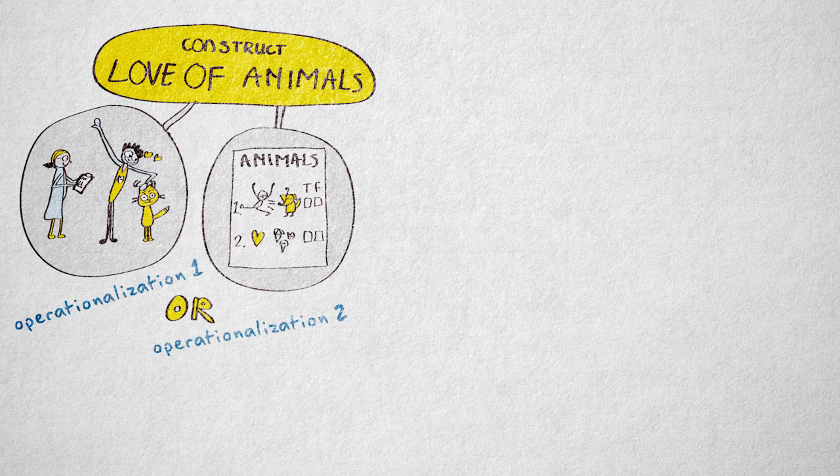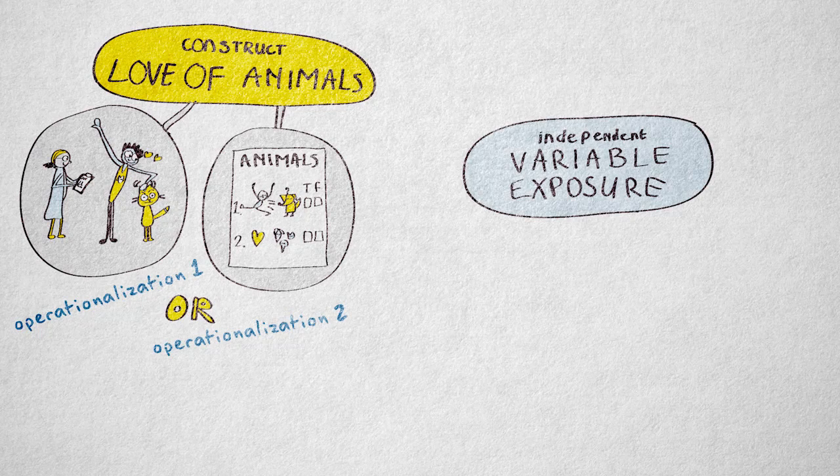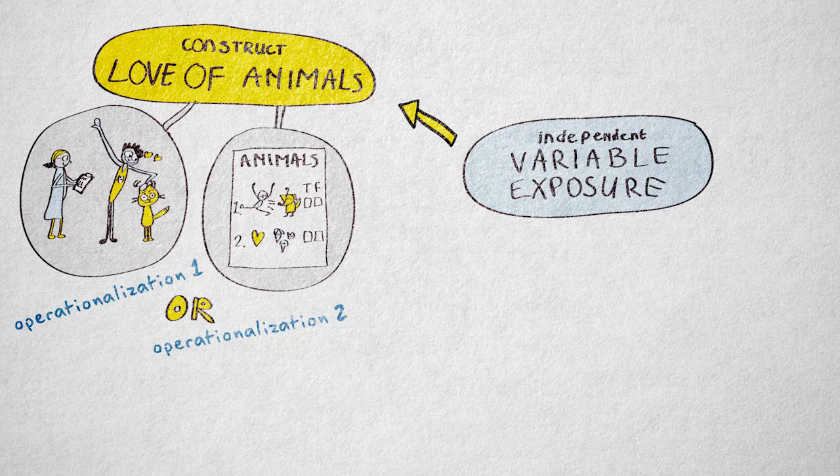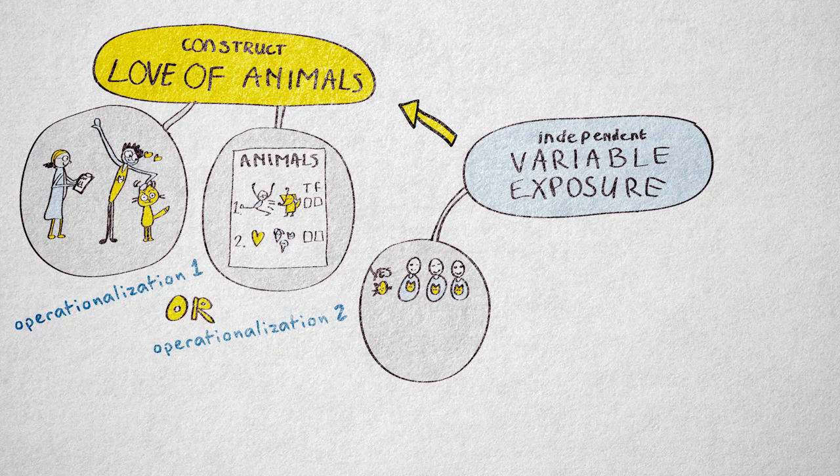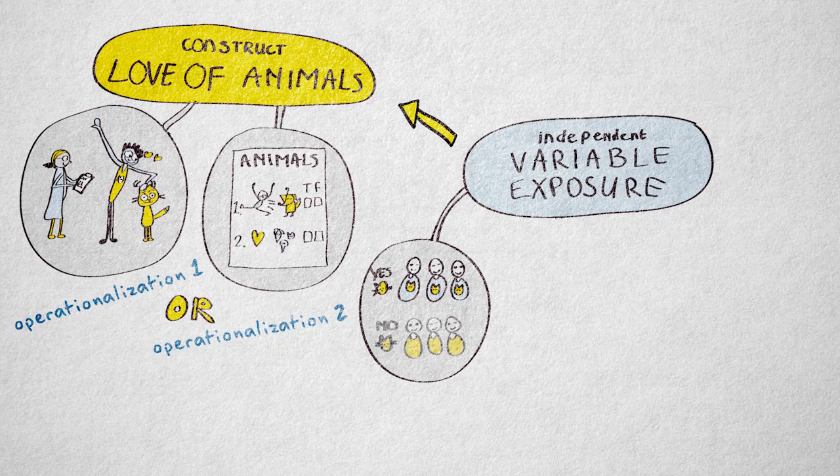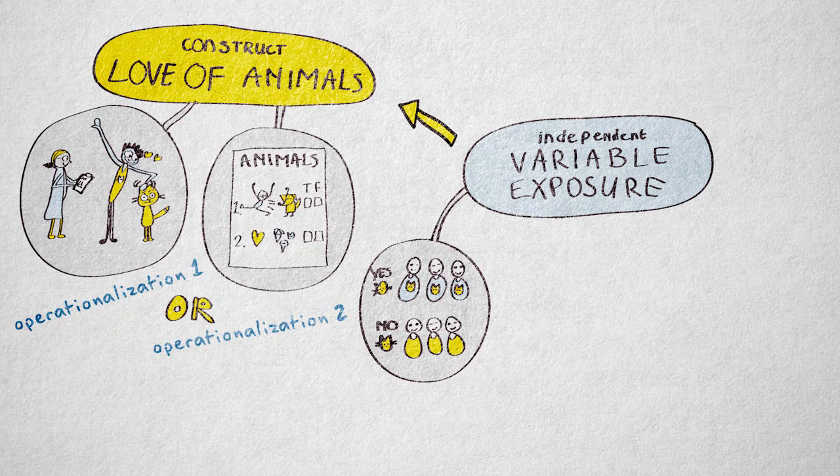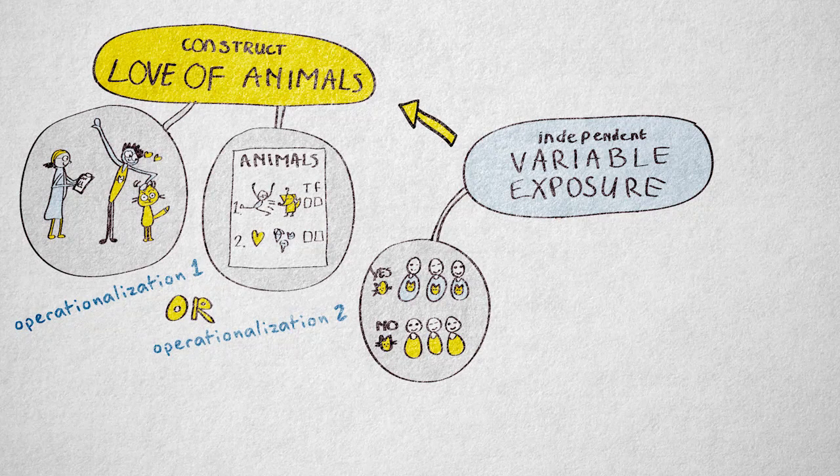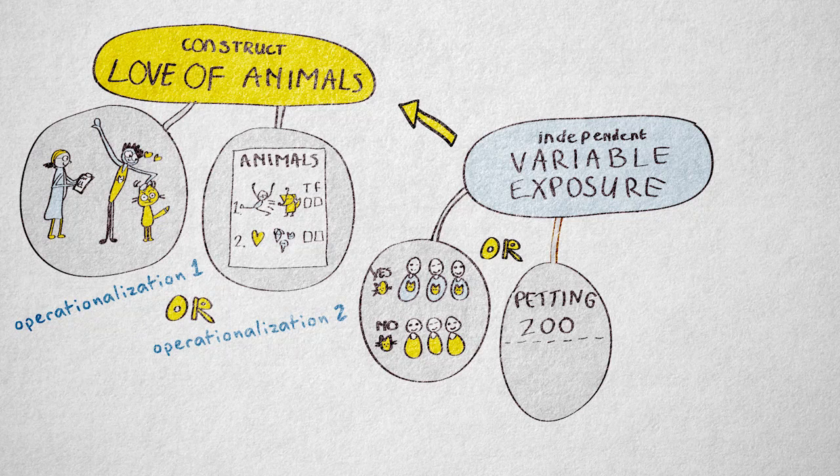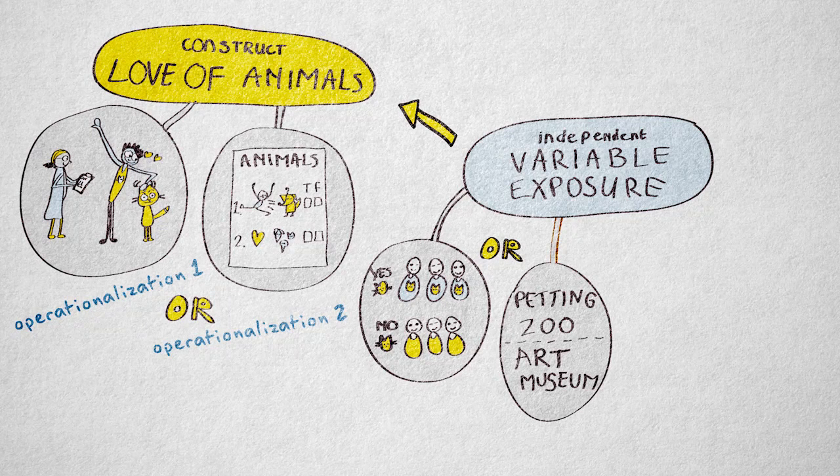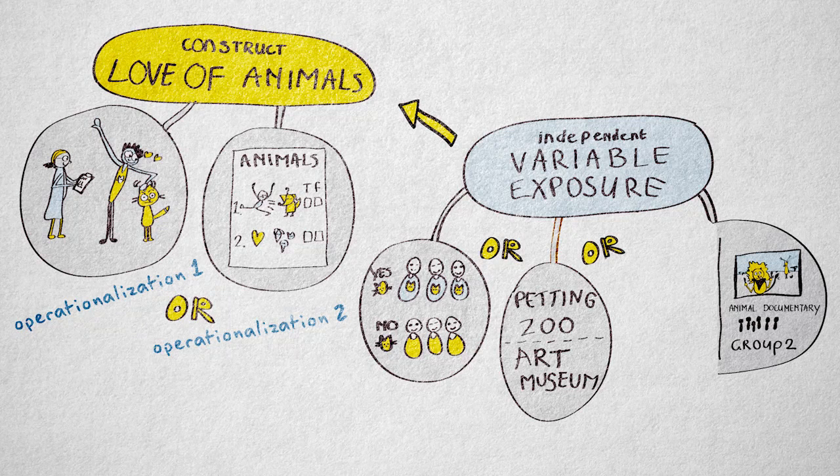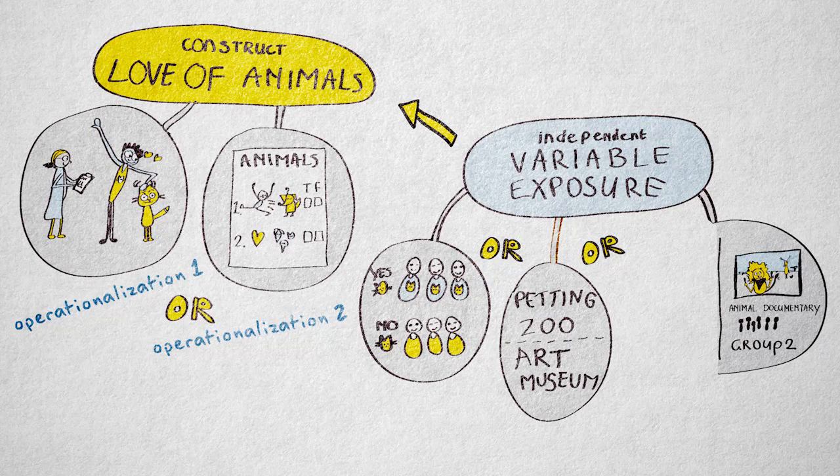What about independent variables that are manipulated? Well, suppose I want to know if exposure to animals increases love of animals. I can operationalize the variable exposure to animals by creating two levels of exposure. I could randomly assign people to take care of a cat from a shelter for a month or assign them to a control condition with no cat. Another operationalization would be to take one half of a school class to a petting zoo and the other half to an abstract art museum. Or I could assign participants to watch an animal documentary or a train documentary.